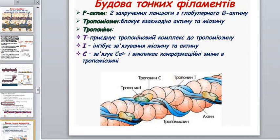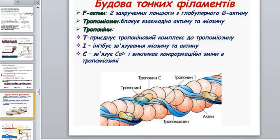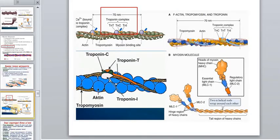There are three types of troponins. Troponin T attaches the troponin complex to tropomyosin. Troponin I inhibits the interaction of myosin and actin. Troponin C binds calcium ions, which causes conformational changes in the tropomyosin molecule.